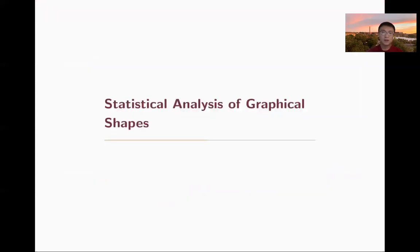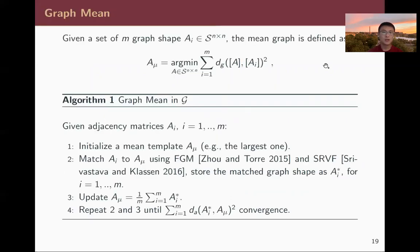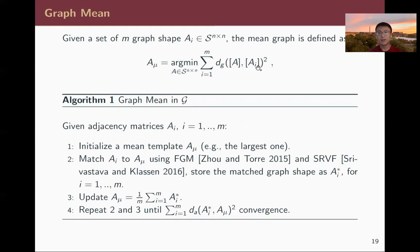Since we have developed a metric for graphical shapes, we can now use it to develop statistical tools. First, we define the mean graph — a canonical Fréchet mean that minimizes the sum of squared distances over all observations. The algorithm iteratively updates the graph matching and elastic edge registration, and also performs the averaging iteratively.